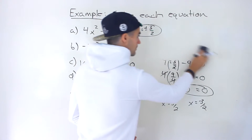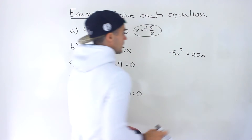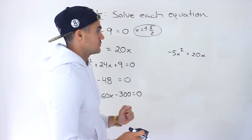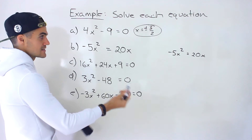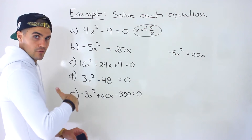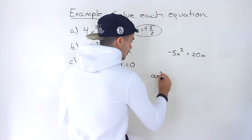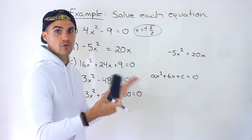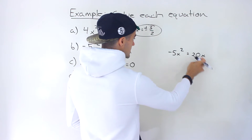Moving on to part B. In this case we got negative 5x squared equals 20x. Notice we have expressions on both sides, so what you want to do is bring everything over to one side. Sometimes it's already arranged for you; sometimes you have to do it yourself. You want to get it to the format where you have a quadratic equaling 0, then work with the left side. You could bring terms to the right or to the left — it doesn't matter.